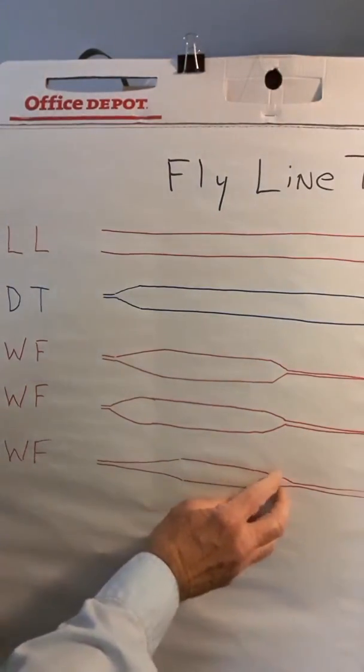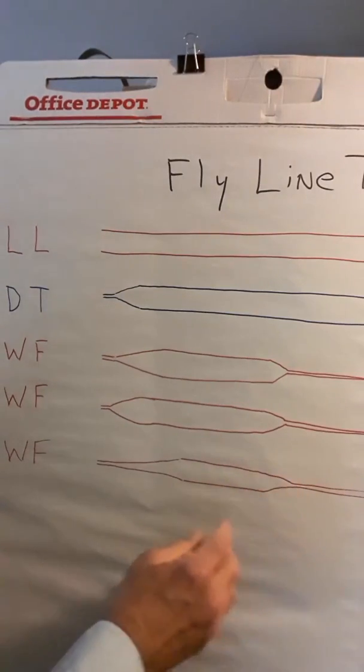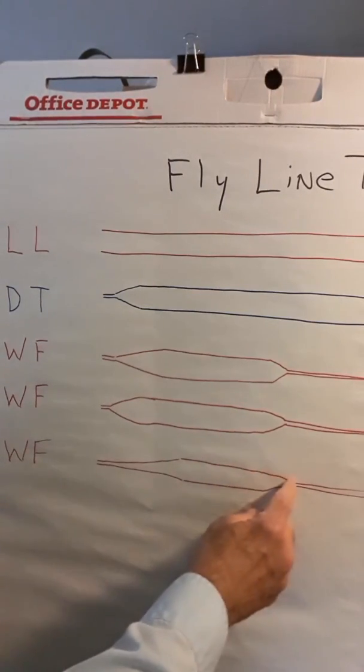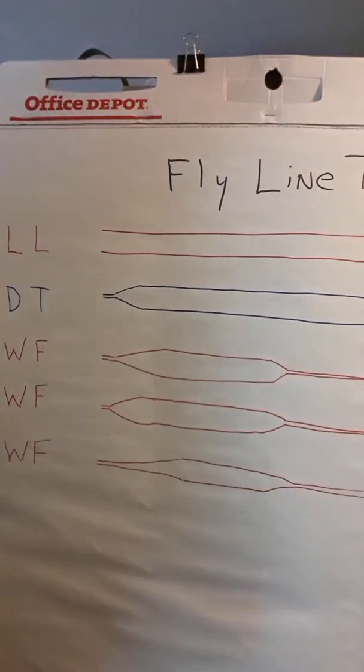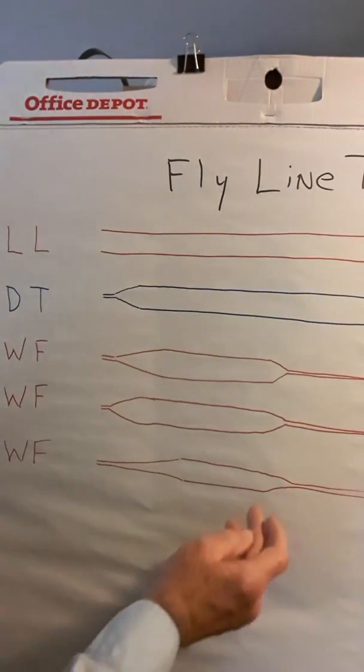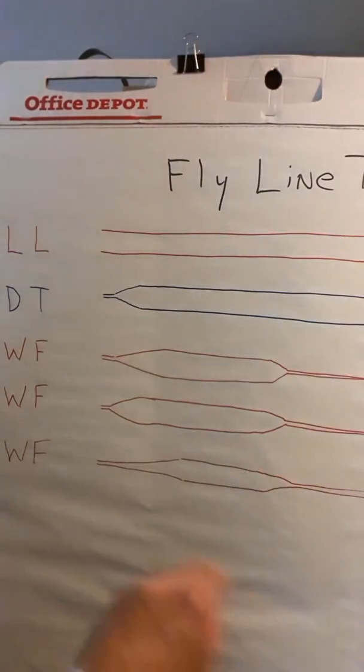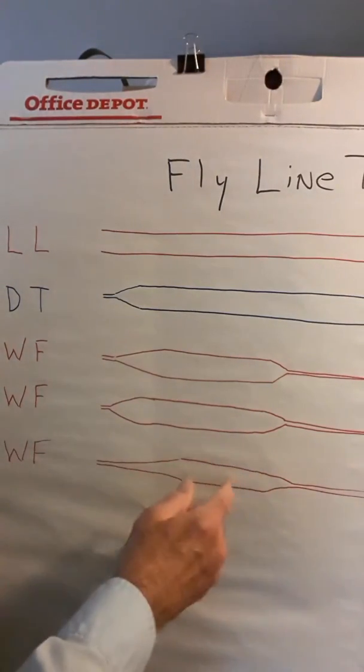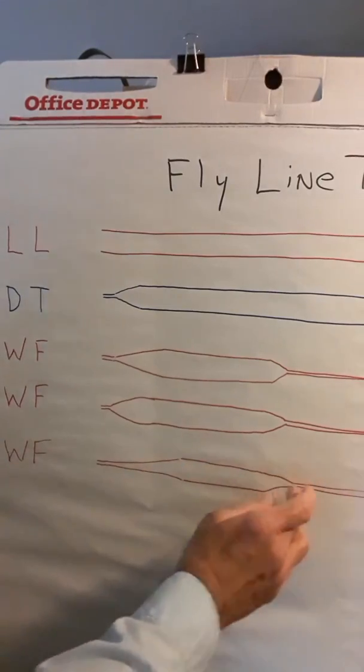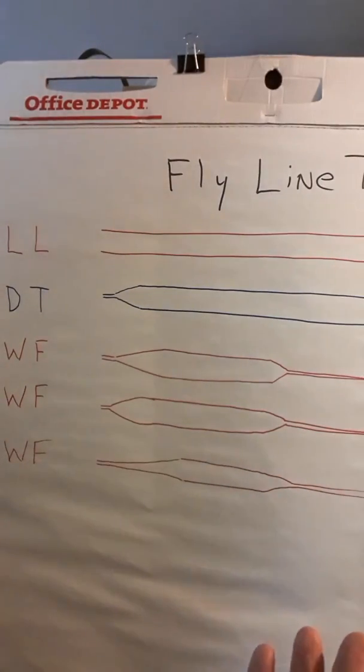The longer the rear taper on these fly lines, say if that rear taper goes out all the way to say 50 feet, well then you can do what we call mending on the water. If the rear taper stops at say, let's say this is only 25 feet, and you make a cast to 35, 40 feet, you're not going to be able to mend this line on the water. So the longer the head, the longer the line on the water that you can mend with.